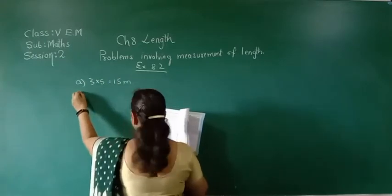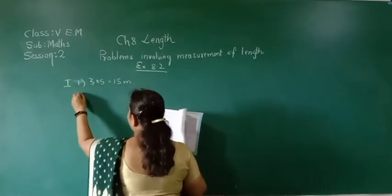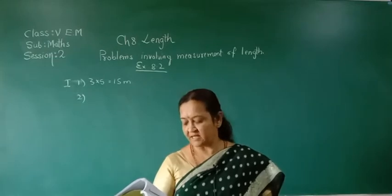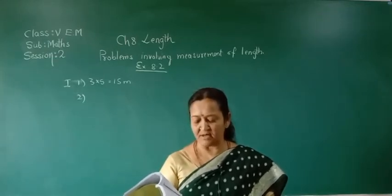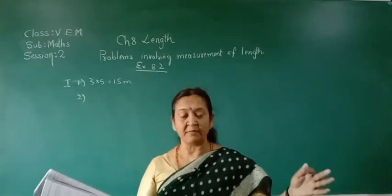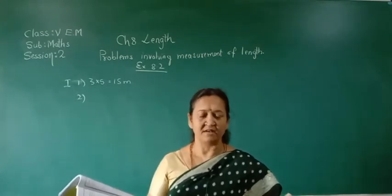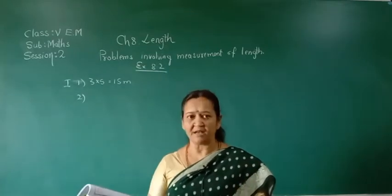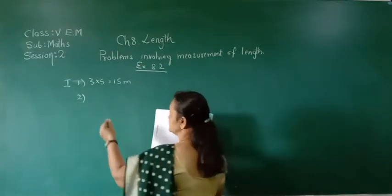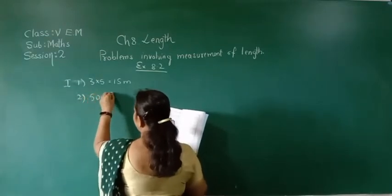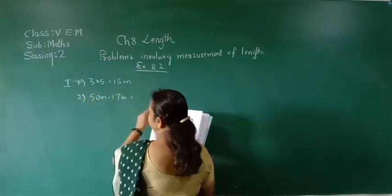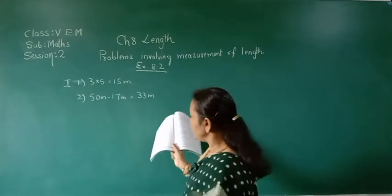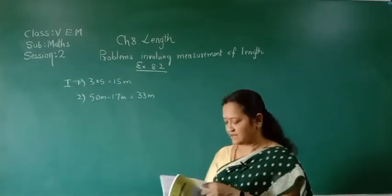Second oral answer: Out of a roll of cloth measuring 50 meters, 17 meters of cloth is sold. Find the length of remaining cloth. Totally 50 meters of cloth is there. 17 meters is given to a customer. So we subtract: 50 meters minus 17 meters. 17 plus 3 is 20, 20 plus 30 is 50. So 33 meters is the answer.